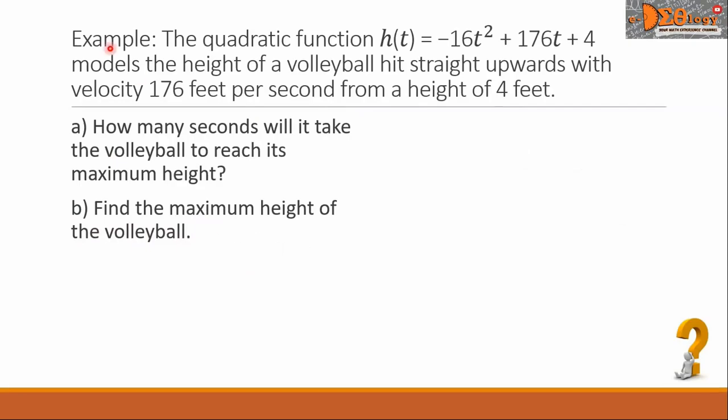Let us have this example. The quadratic function h(t) = -16t² + 176t + 4 models the height of a volleyball hit straight upwards with velocity 176 feet per second from a height of 4 feet.